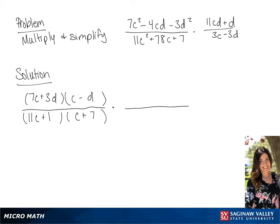We're going to factor the second fraction. In the numerator, we will have d(11c + 1) over 3(c − d).